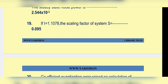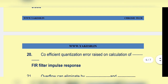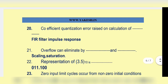If i equals 1.1078, the scaling factor s equals 0.095. Coefficient quantization error arises from calculation of the filter's amplitude response. Overflow can be eliminated by scaling and saturation. Representation of 3.5 base 10 is 0.011.